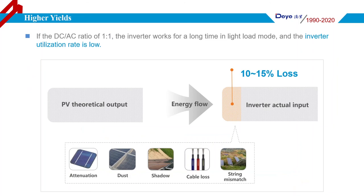Since there are many factors affecting PV module output power, such as cluster shading, cable losses, and so on, if the DC/AC ratio is 1, the inverter may work in a non-full-load mode and inverter utilization will be low.